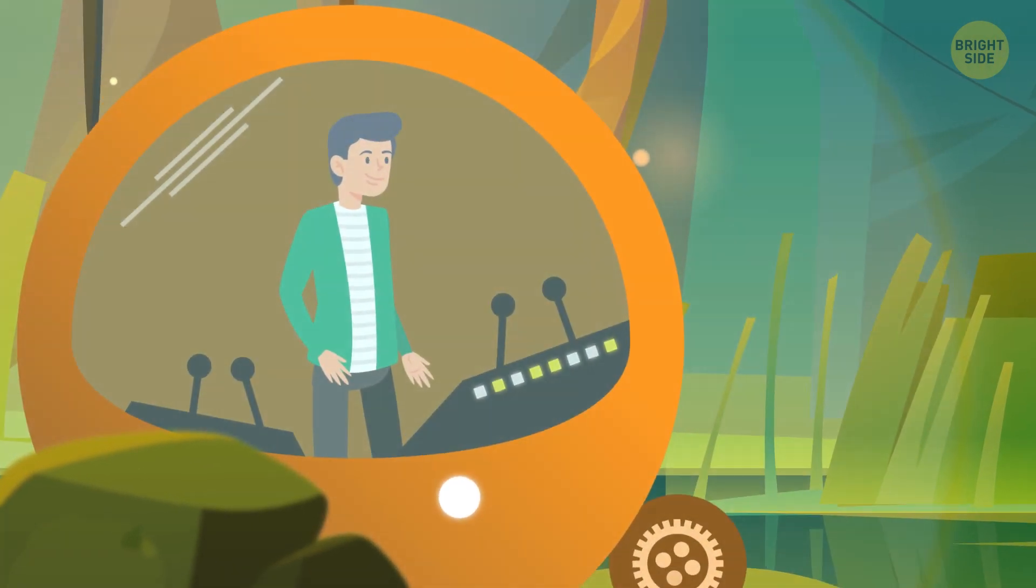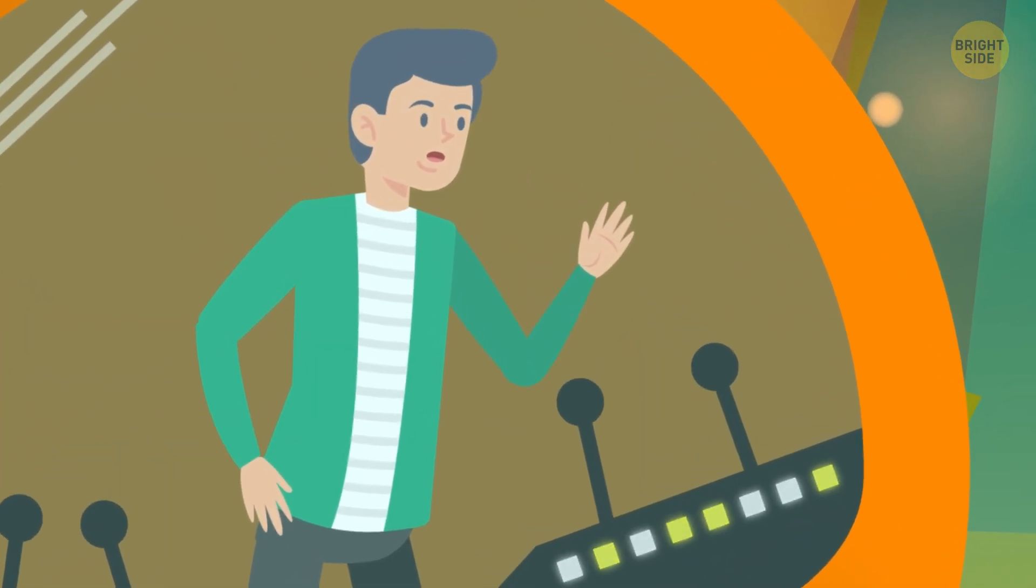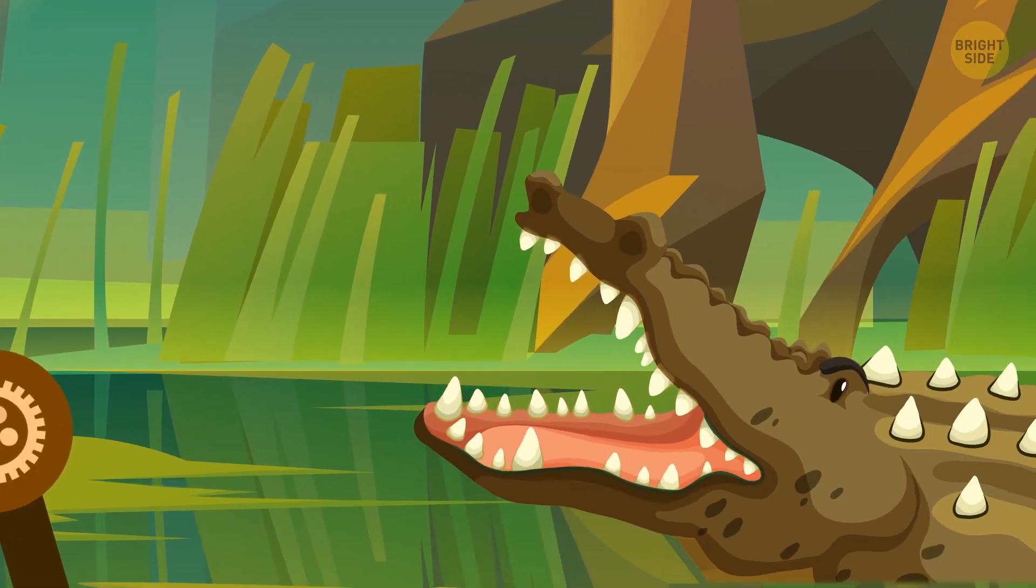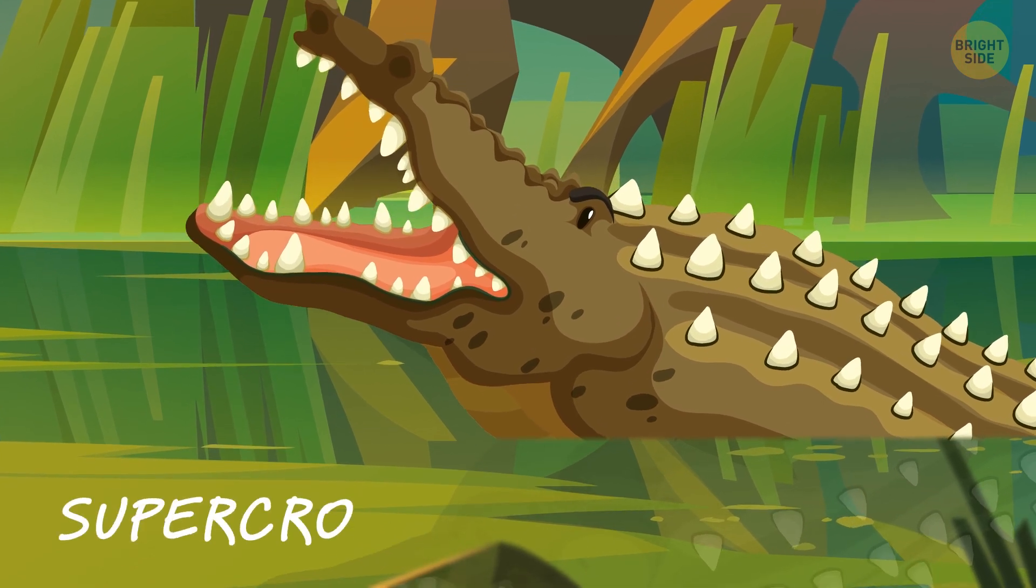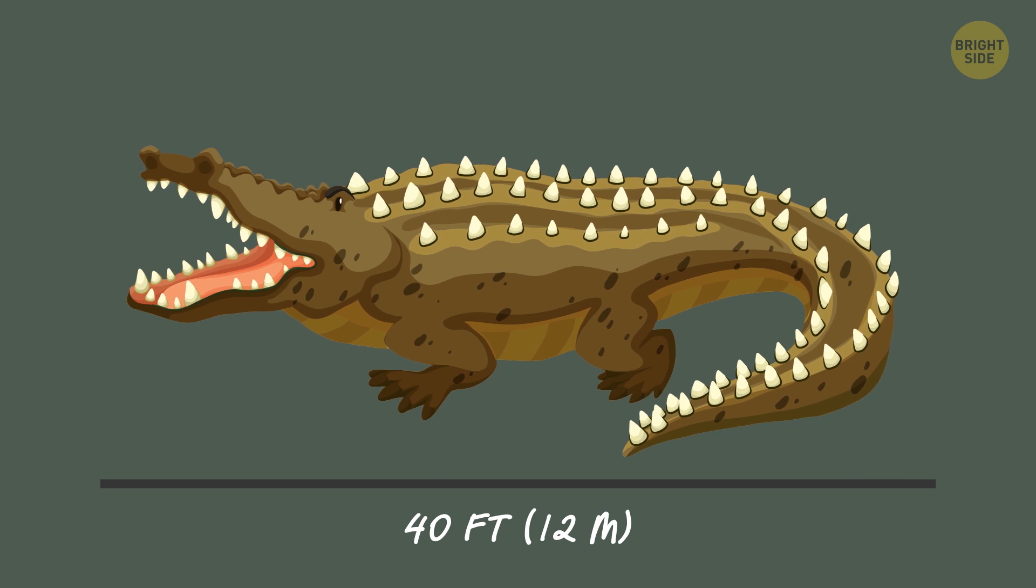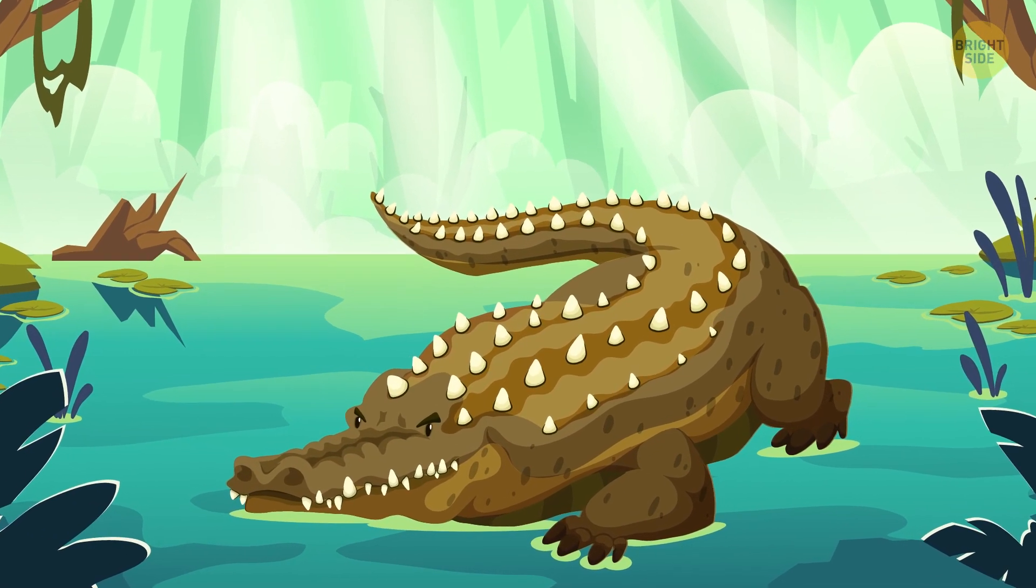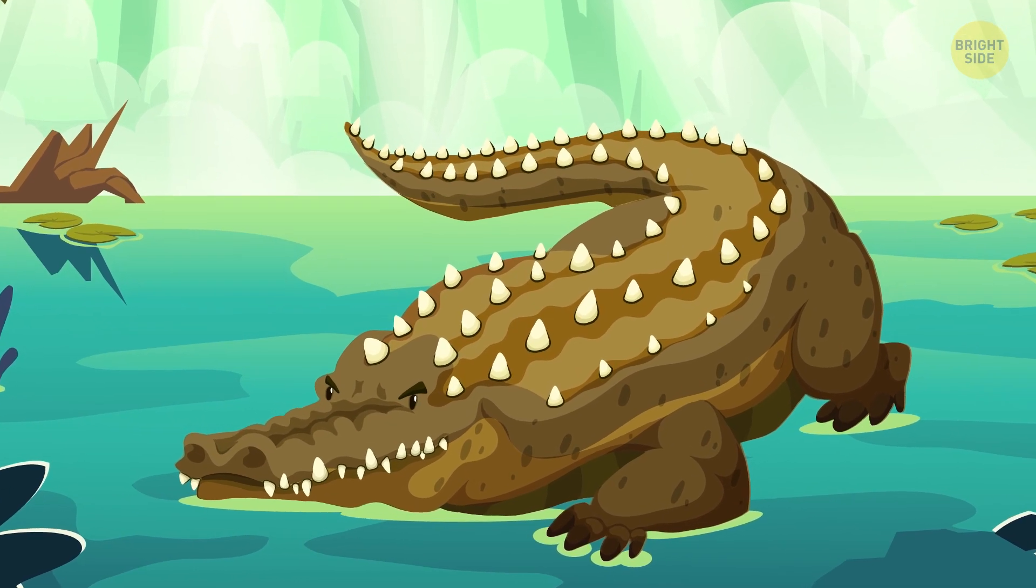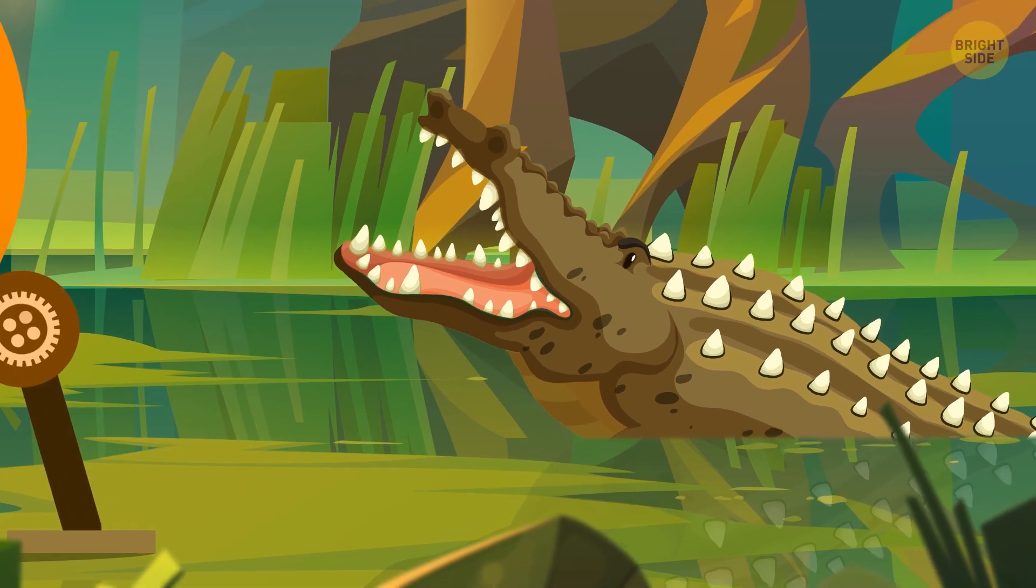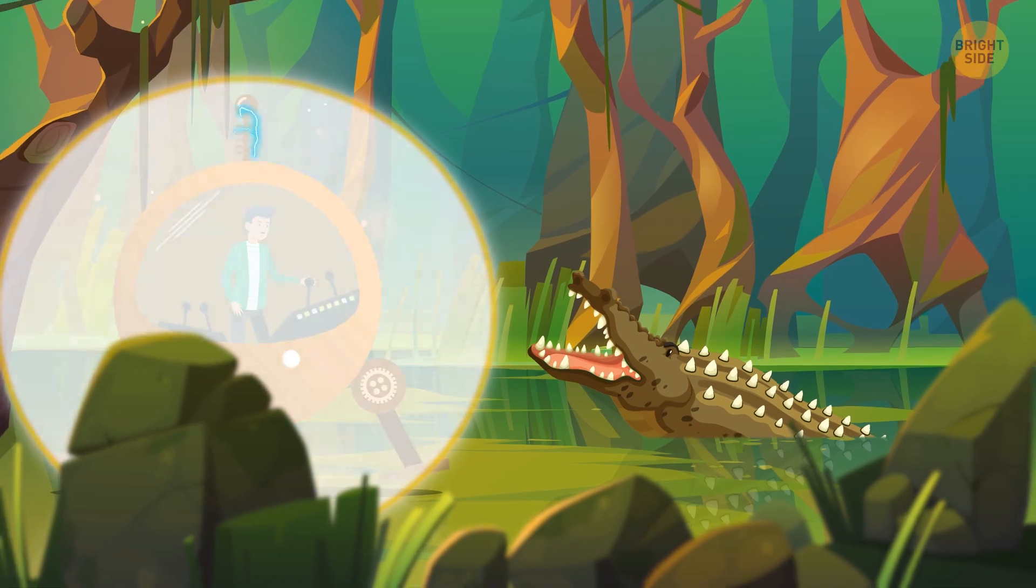When the time machine makes a stop 100 million years BCE, Sam gets the fright of his life. Just a few feet from him, there's a gigantic crocodile. That's the so-called super croc, an enormous creature 40 feet long and weighing almost 10 tons. By this time, crocodiles have already been evolving into something resembling modern animals for at least 100 million years. That's why super croc looks familiar, although more than twice bigger than the animals Sam saw in his time.